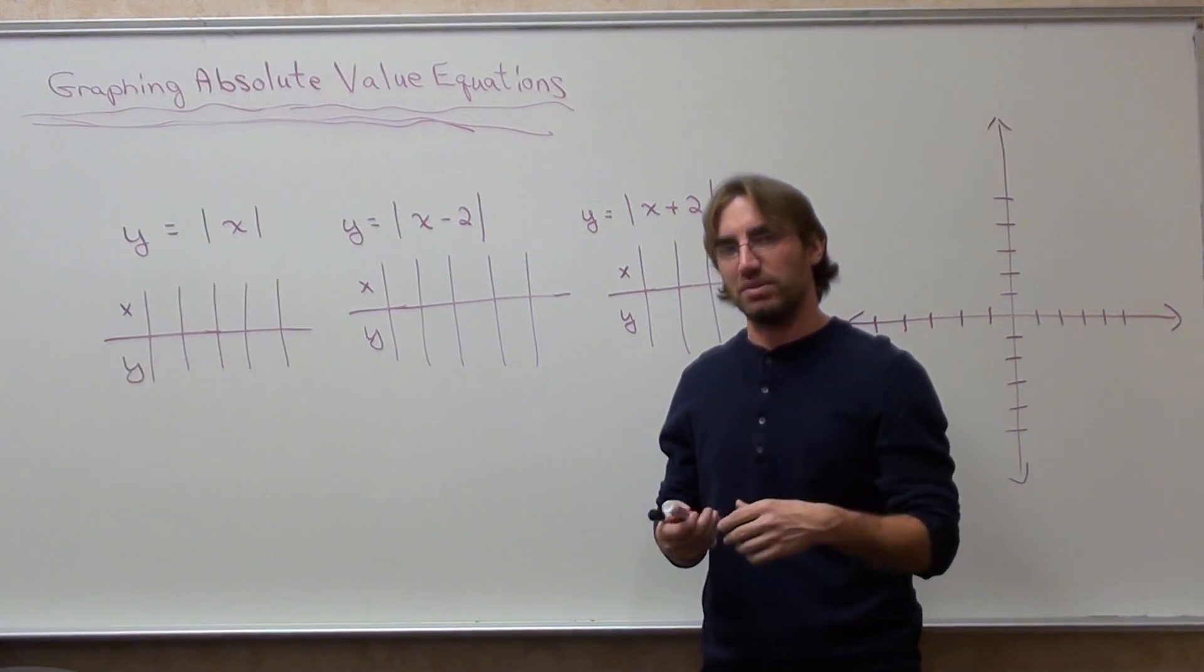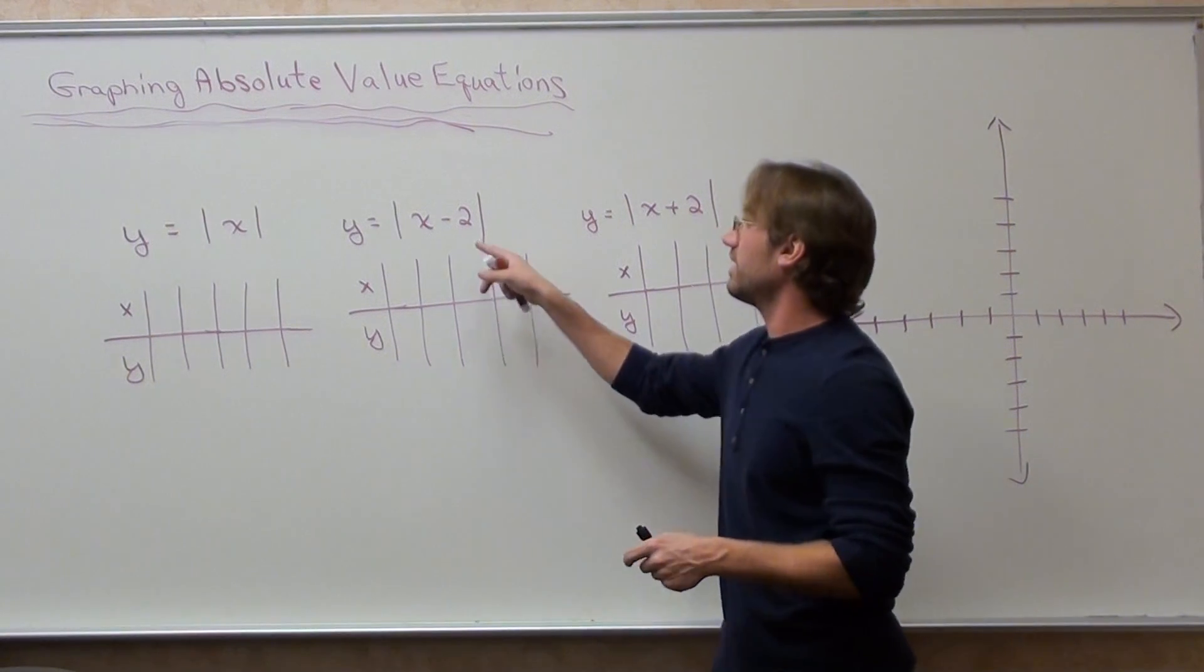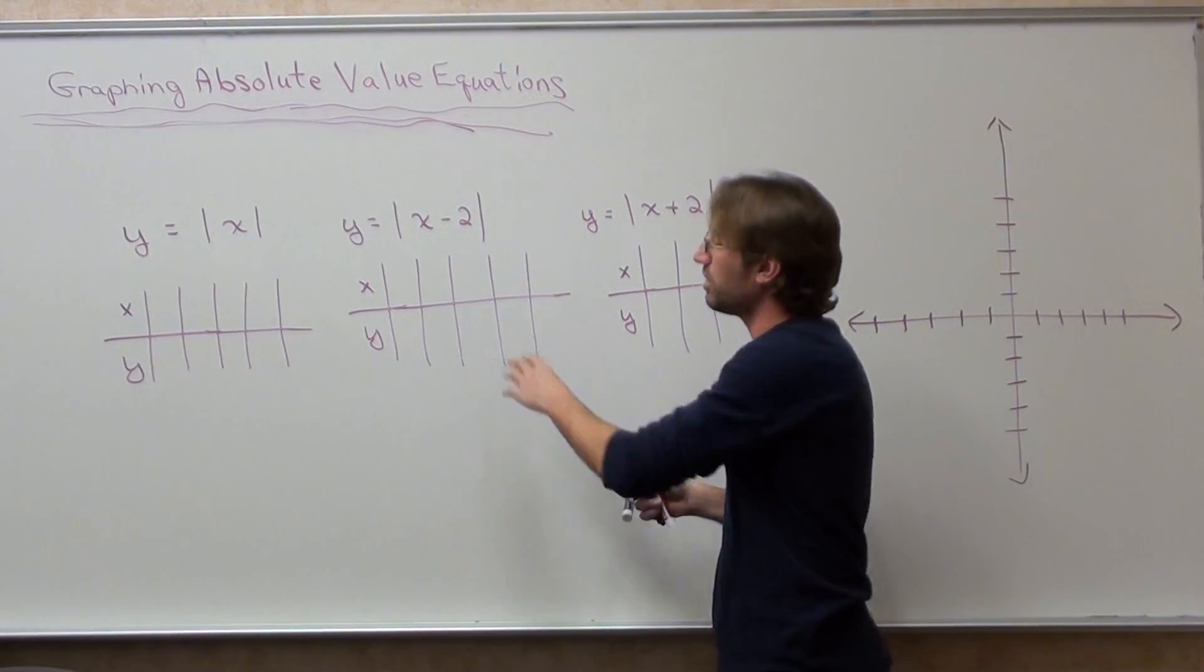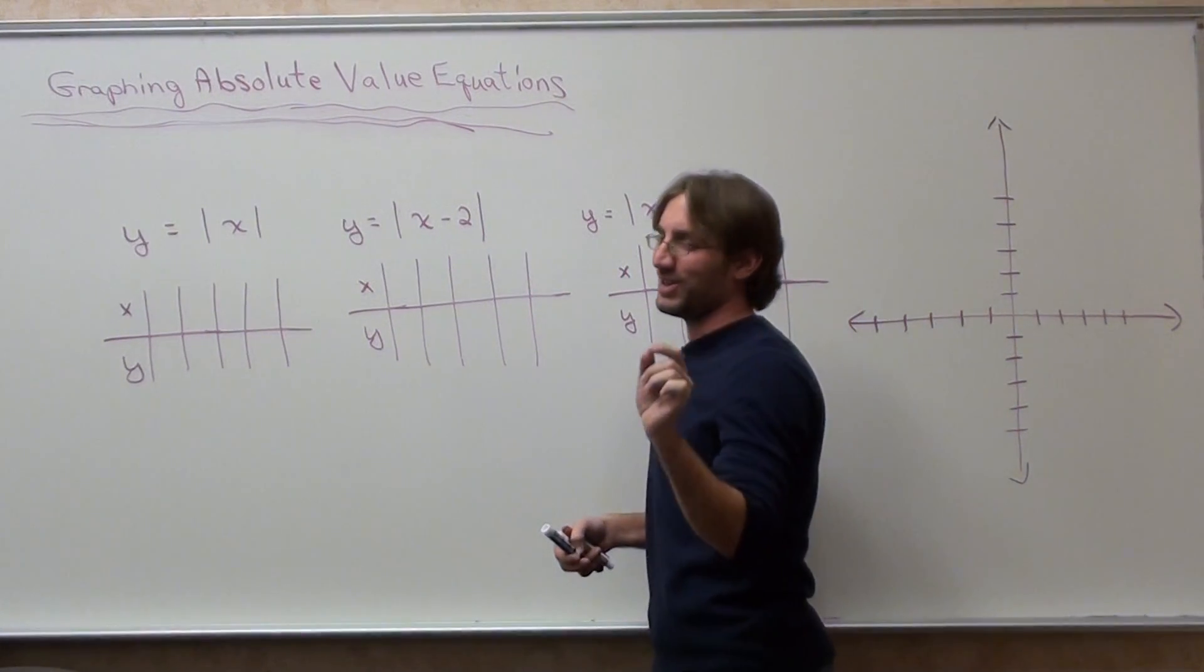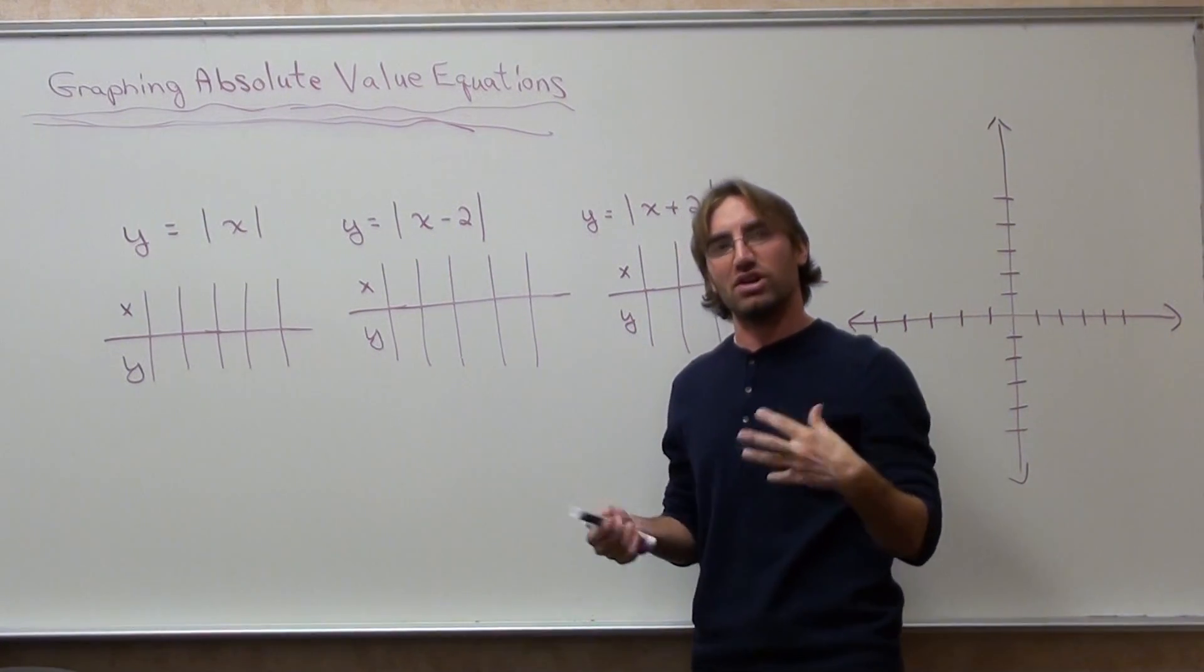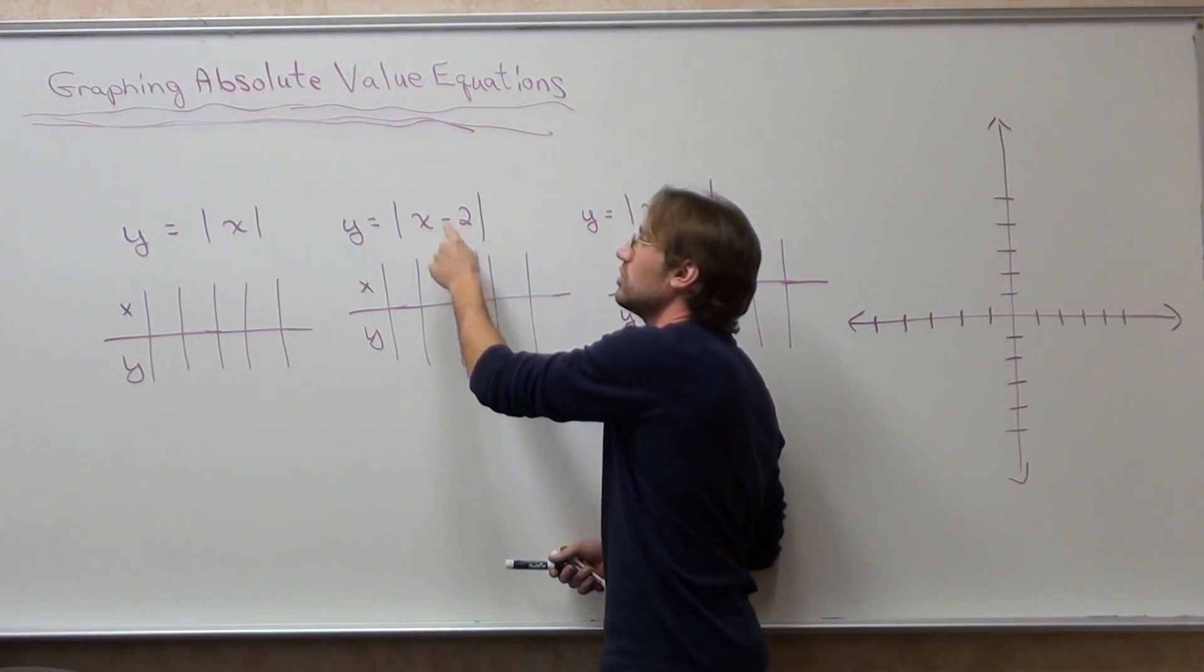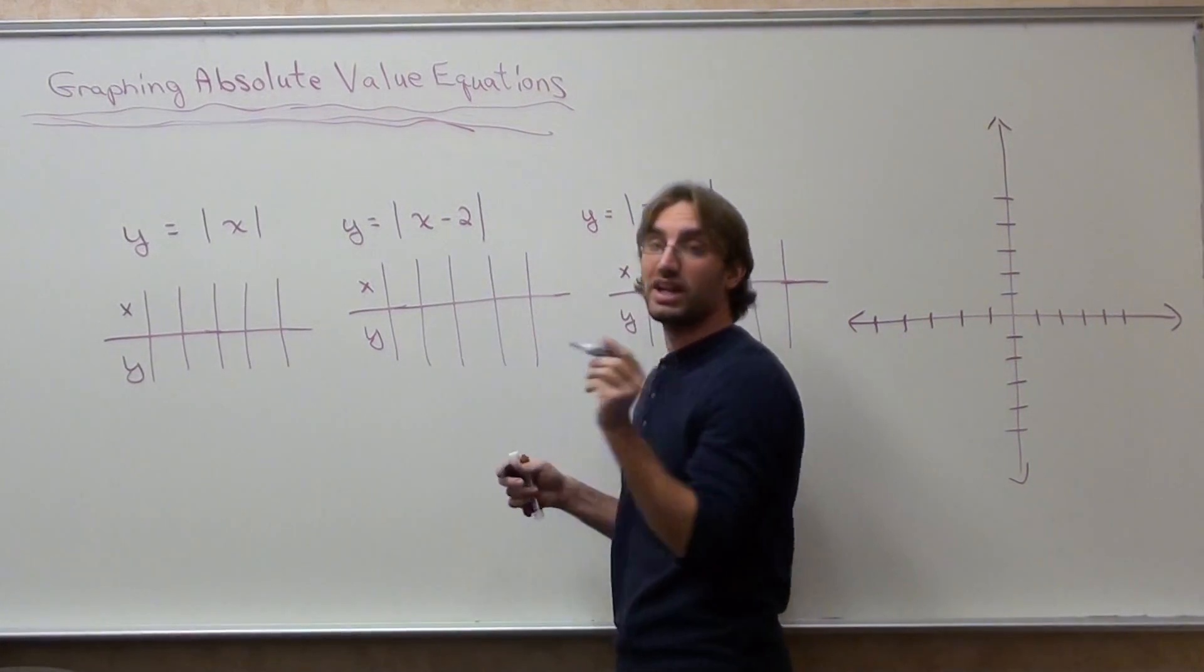When it comes to making absolute value tables, you look for the opposite value of the number with the x, and you divide by the number in front of the x. That will be your vertex point, your middle point on your graph. So the opposite of negative 2 is 2, and 2 divided by 1 is 2. You're going to put that in your middle value.